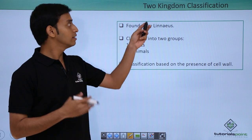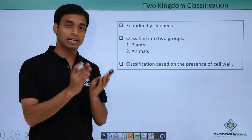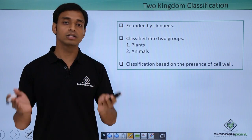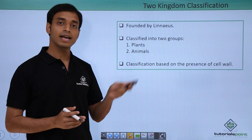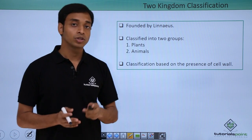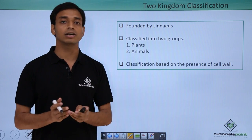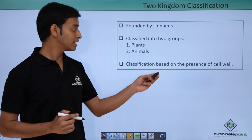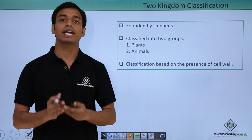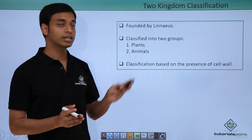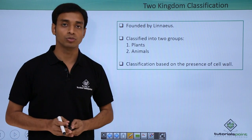According to Linnaeus, in this two kingdom system of classification, he classified organisms into two groups: first, the plants, and second, the animals. This classification was mostly done because of the presence or absence of cell wall, which was the major characteristic considered by Linnaeus to differentiate between these two groups.